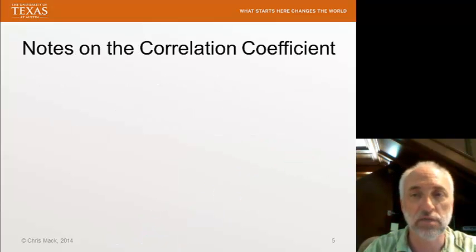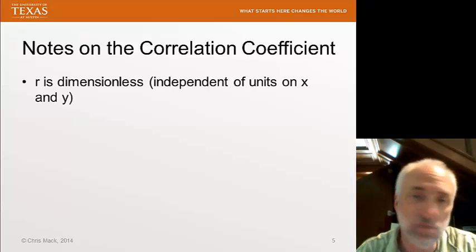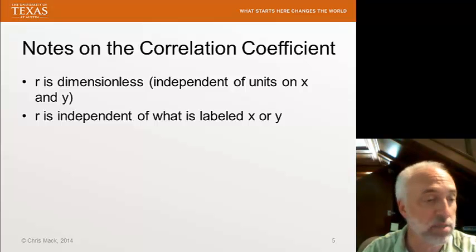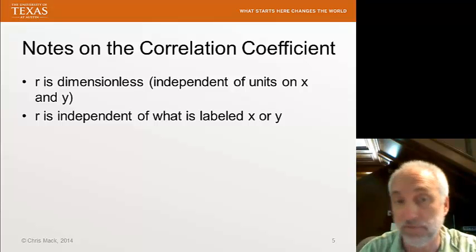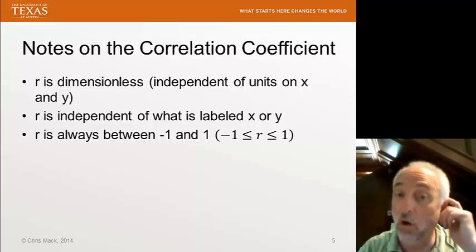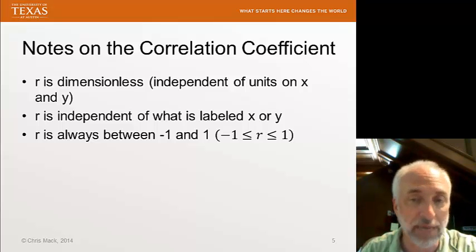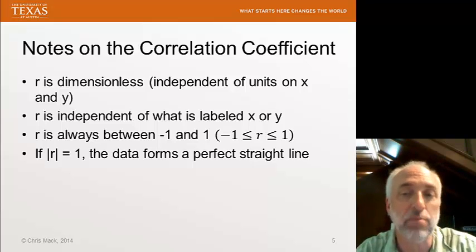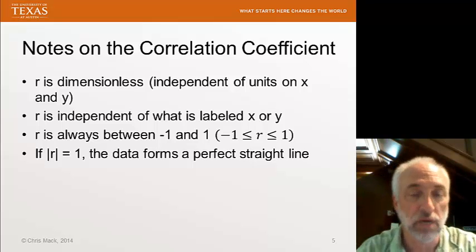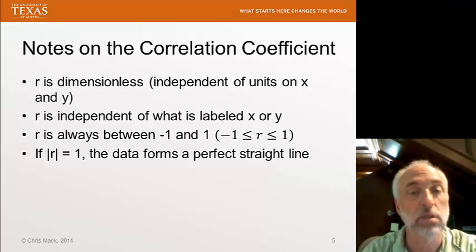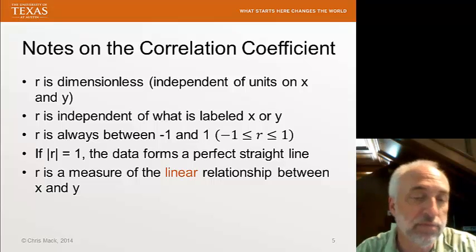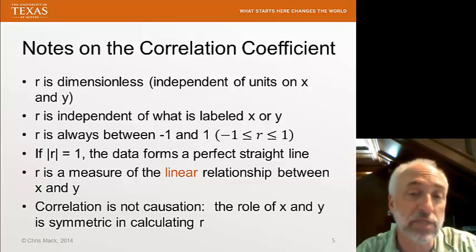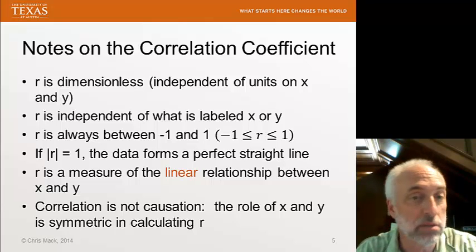Let's discuss some of the properties of this correlation coefficient. First of all, R is dimensionless. It's independent of the units on X and Y. And that's because our Z scores are dimensionless. R is independent of what is labeled X or Y. It's completely symmetric. You can call one X the other Y or switch the labels around. It makes no difference from the R perspective. R is always between minus 1 and 1. It can never have a magnitude bigger than 1. If the magnitude of R is equal to 1, that means the data is forming a perfect straight line. So that's the extreme case of perfect correlation, perfect linear correlation, so that we get a straight line. That's why we interpret R as a measure of the linear relationship between X and Y. And because of the symmetry, I can flop X and Y around and get the exact same value for the correlation coefficient.